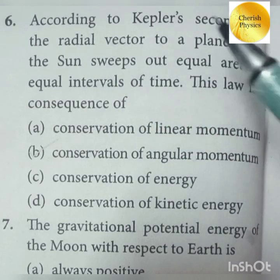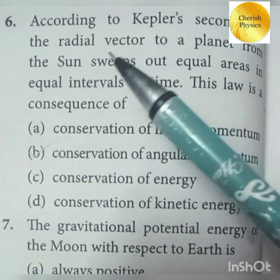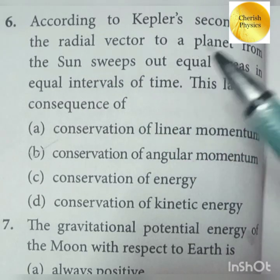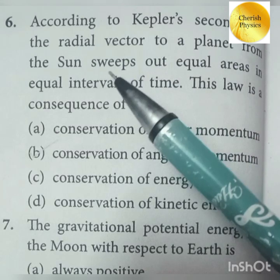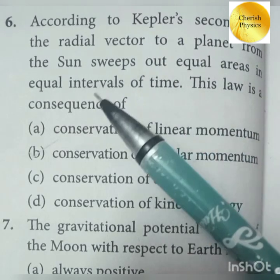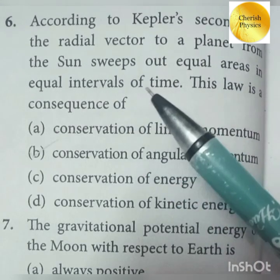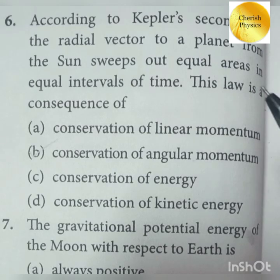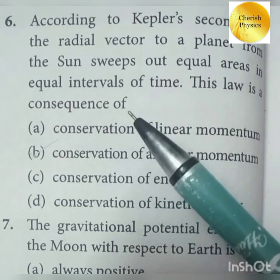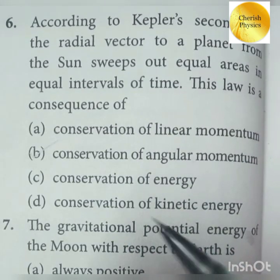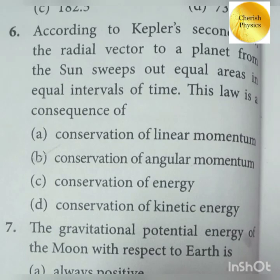According to Kepler's second law, the radial vector to a planet from the sun sweeps out equal areas in equal intervals of time. This law is a consequence of the conservation of angular momentum.